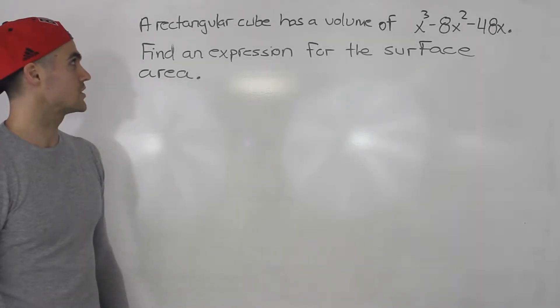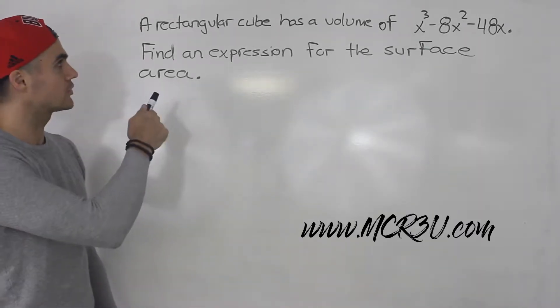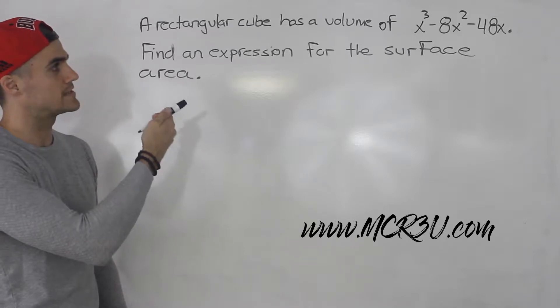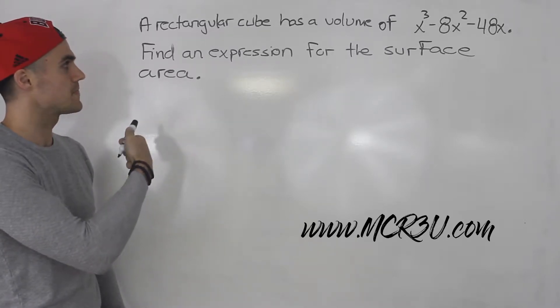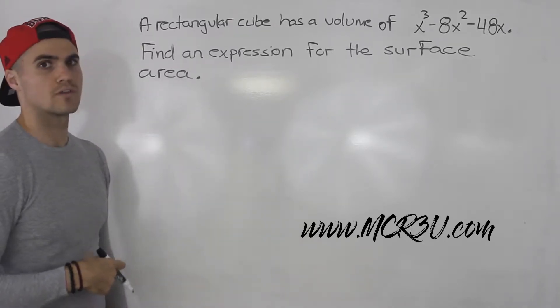Welcome back everybody. In this question we're told that a rectangular cube has a volume of x cubed minus 8x squared minus 48x. We have to find an expression for the surface area.